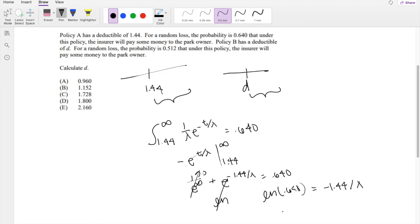Solving for lambda, I'm going to bring the lambda to this side and divide this by this. So negative 1.44 divided by natural log of 0.640. So that's what lambda is equal to.